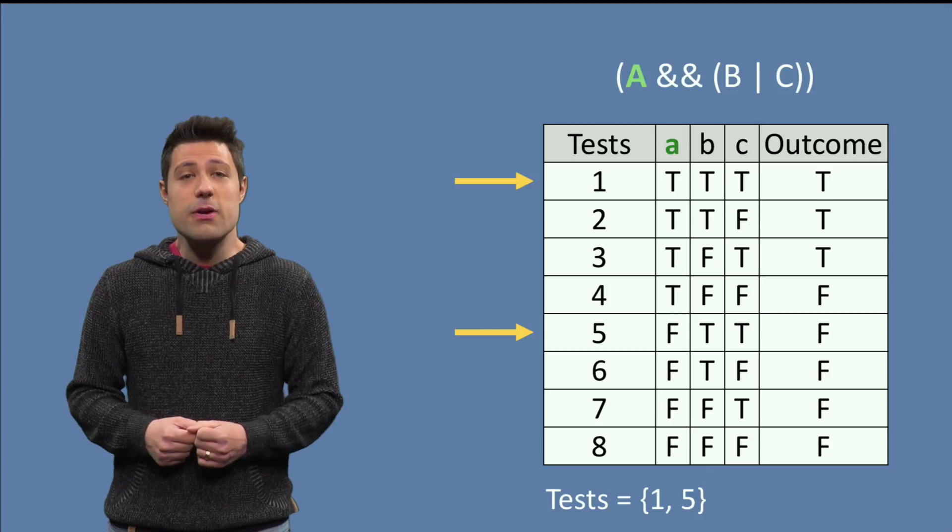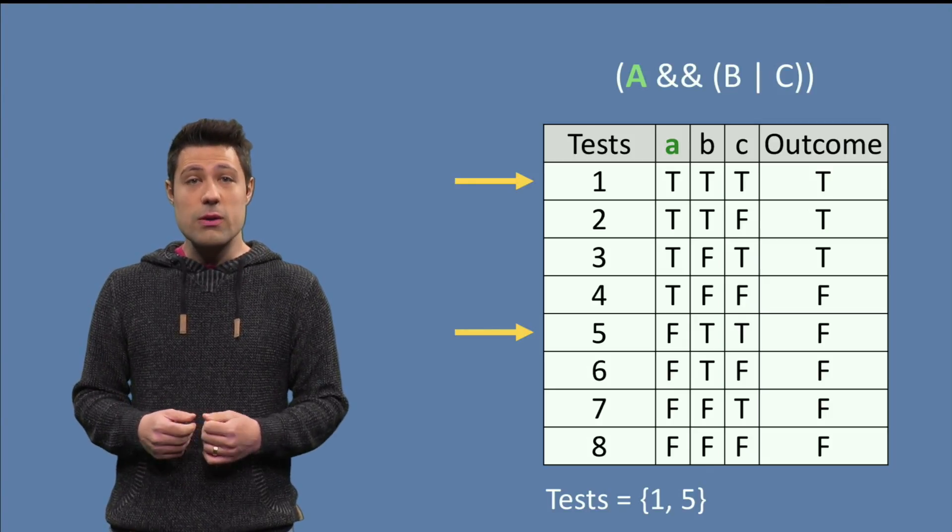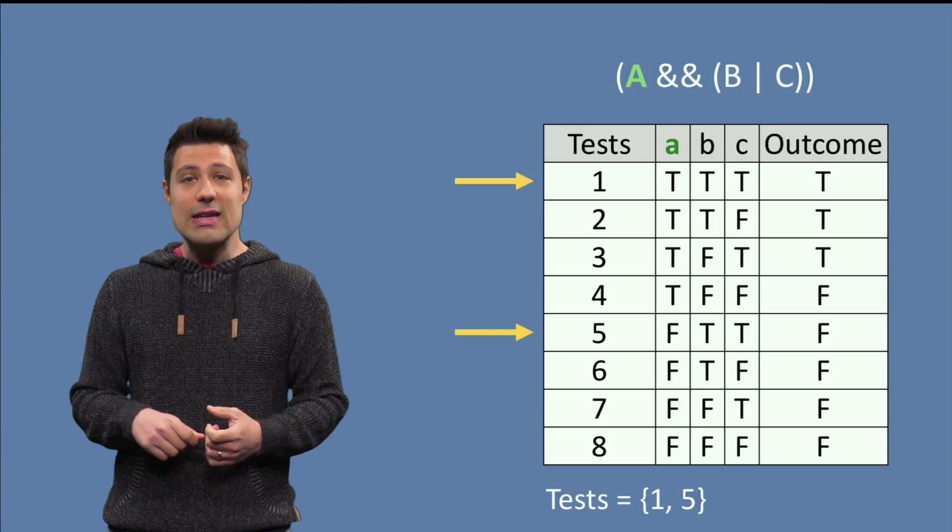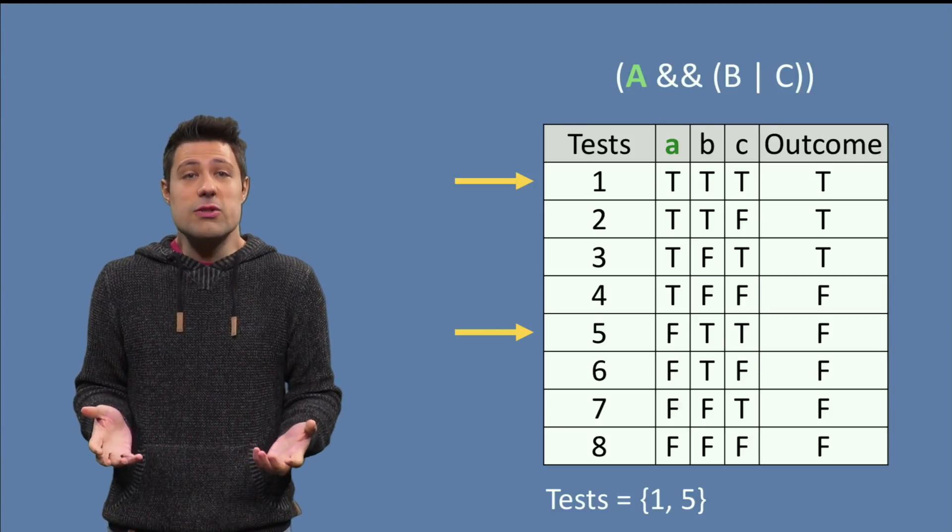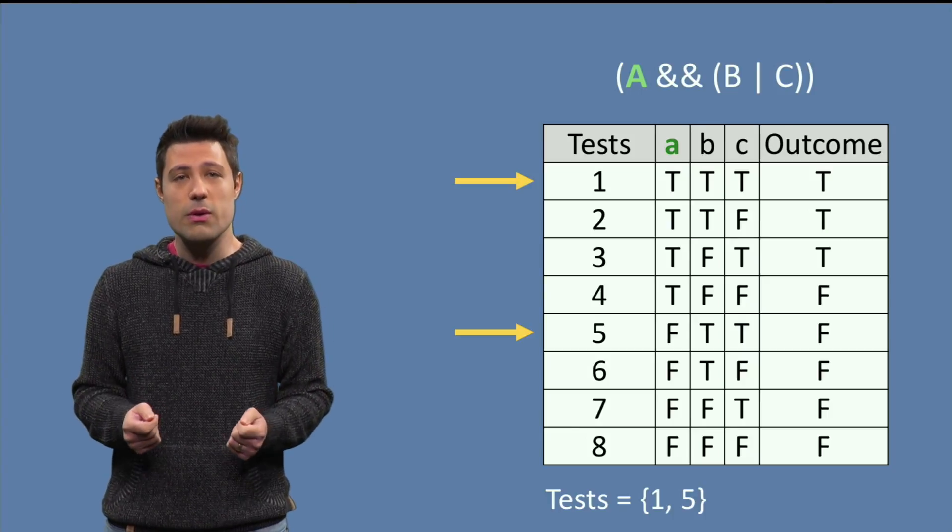And usually, a single pair of tests per condition is enough. After all, we already found a way to exercise that condition in an independent way. But let's continue because at the end, having all the possibilities will help us to minimize the total number of tests.